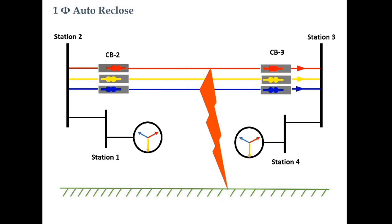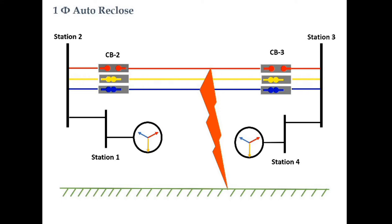Because of the fault, the relay at Station 2 and Station 3 will sense the fault and give an opening command to the respective circuit breakers — Circuit Breaker 2 and Circuit Breaker 3. From the figure it can be observed that all phases have different compartments, meaning these circuit breakers are single-pole operated. As a result, the R-phase pole in both stations will open. After opening of the R-pole, the fault will be cleared, and the relay at both ends will give a reclose command to the circuit breakers, which will close after one second — known as dead time.